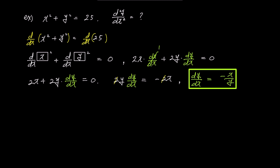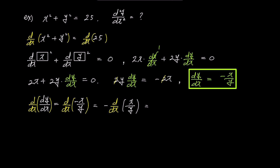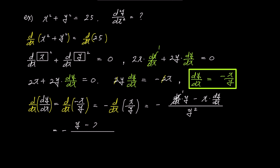Now that we have found the first derivative, let's use it to find the second derivative. If we write down our dy over dx result and differentiate both sides with respect to x again, it becomes d of negative x over y over dx. Pulling the minus sign out, we write it as negative d of x over y over dx. Using the quotient rule, the denominator becomes y squared, and the numerator becomes dx over dx times y minus x times dy over dx.